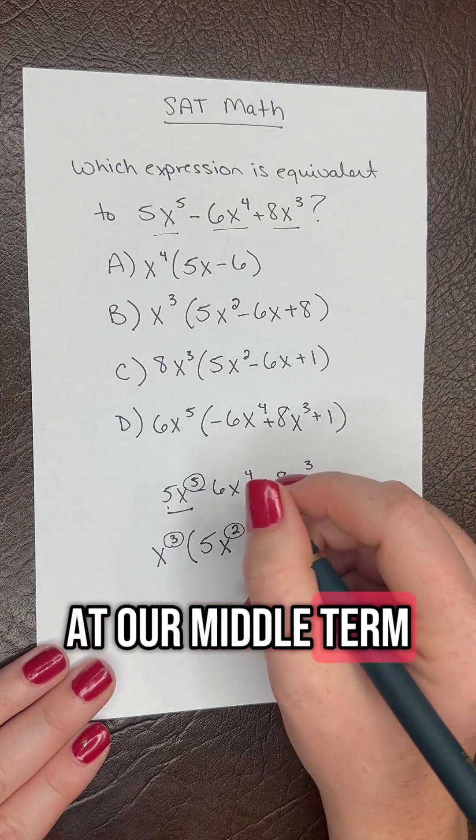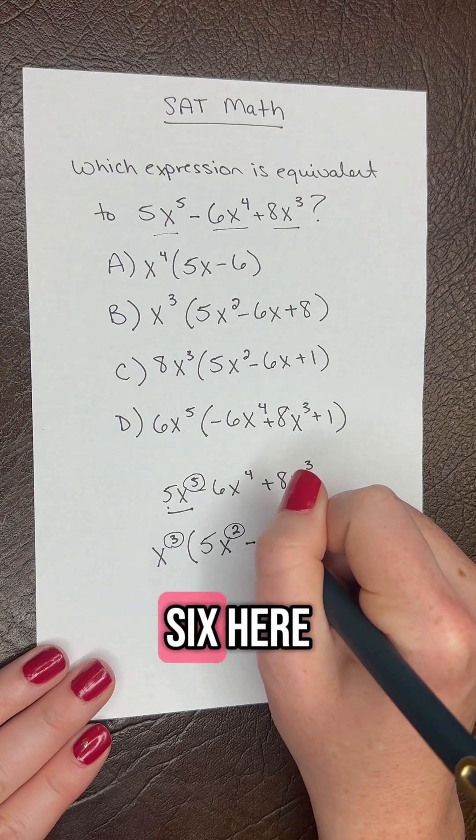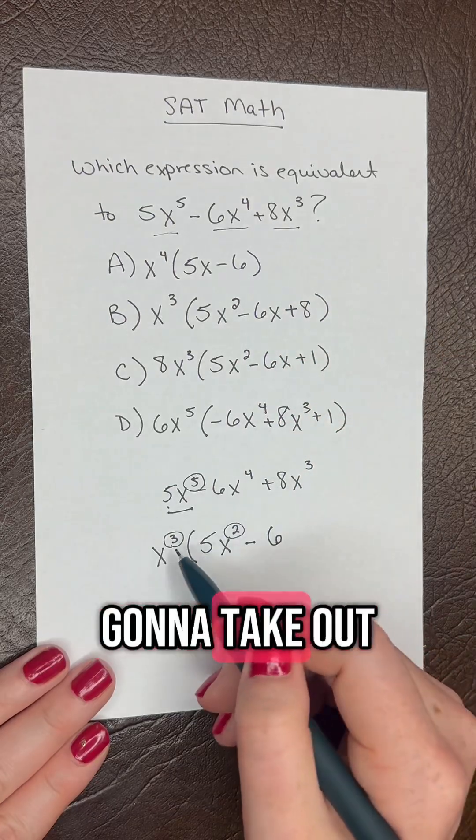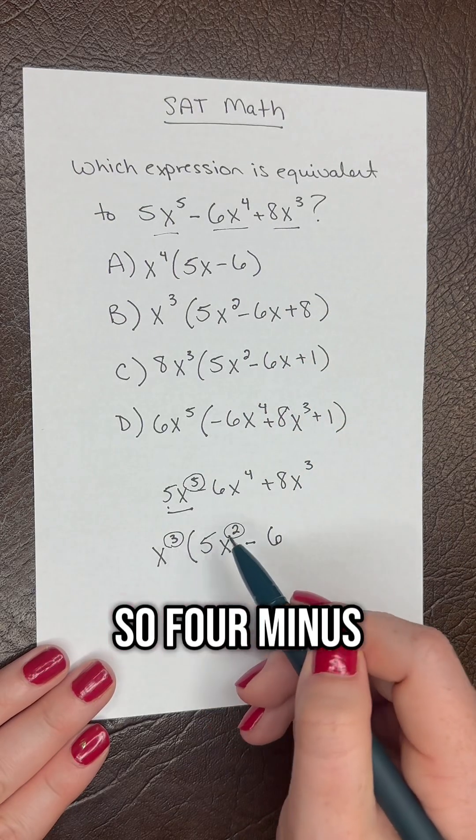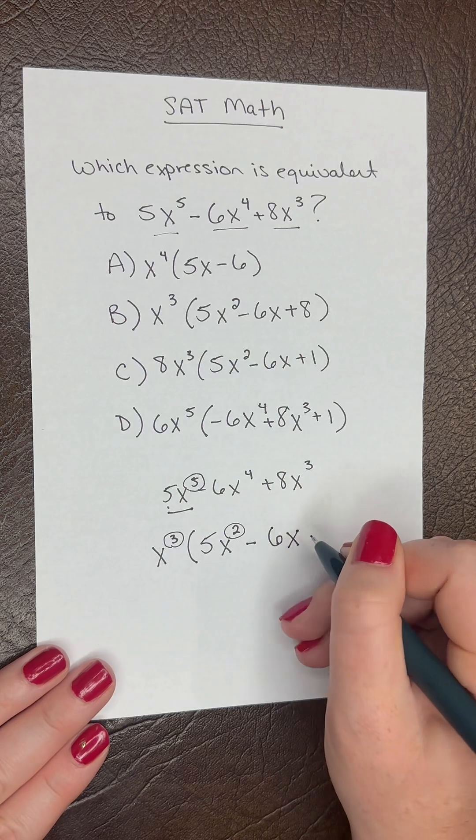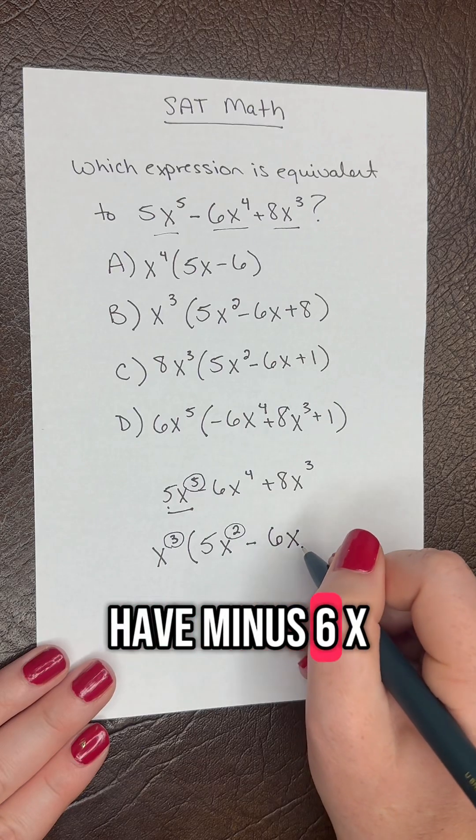Now let's look at our middle term. We have minus, we're still going to have the six here, and then we have x to the fourth, and then we're going to take out the three. So four minus three gives us one, so we're just going to have x. And when it's x to the first we don't need to write the one there, so we just have minus 6x.